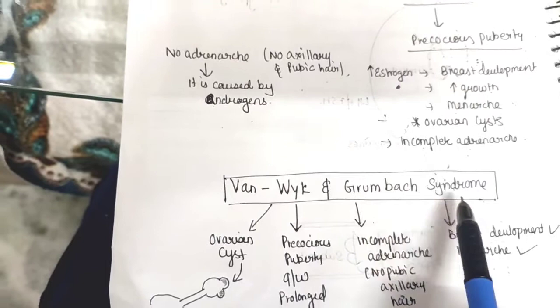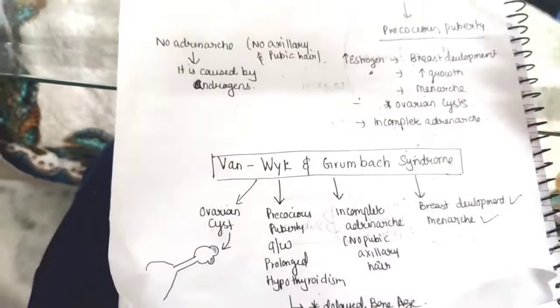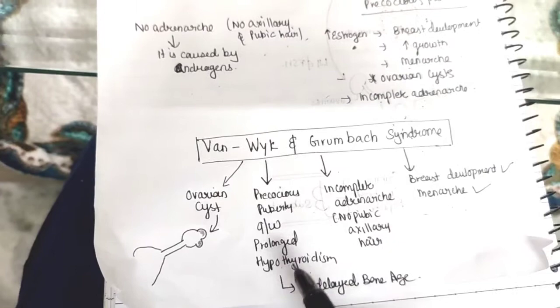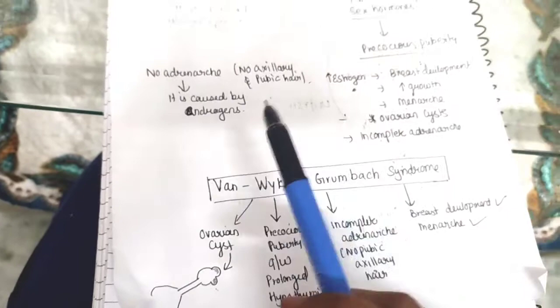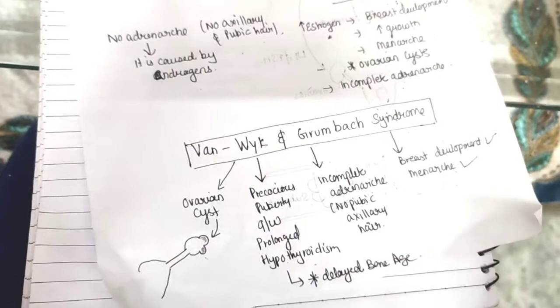There is one syndrome that is associated: Van Wyk-Grumbach syndrome. What you will see in this syndrome—first of all, this syndrome is seen with prolonged hypothyroidism. There will be precocious puberty associated with prolonged hypothyroidism. What else? You will find ovarian cysts and incomplete adrenarche. There will be no pubic and axillary hair, but there will be breast development and menarche. The estrogenic effect will be there.